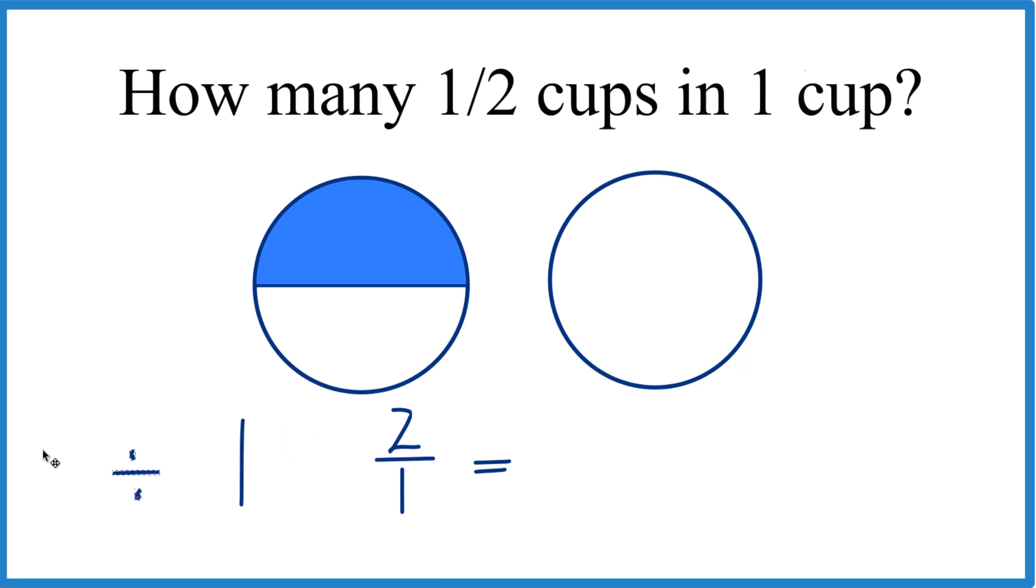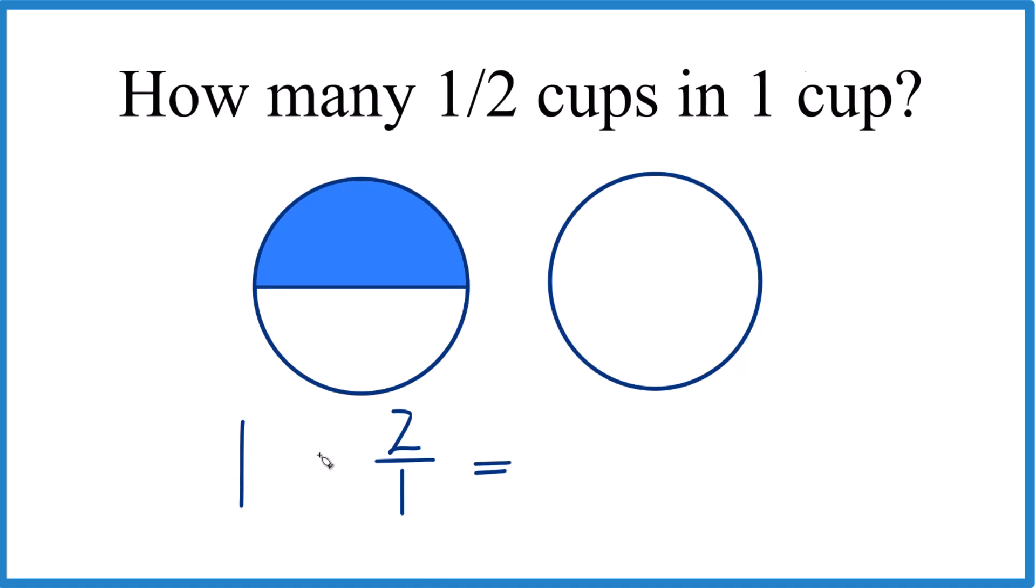And instead of division, we get rid of that, and we're just going to do multiplication, which is usually easier. So 1 times 2 over 1, it's just 2 over 1, and 2 divided by 1 is 2.